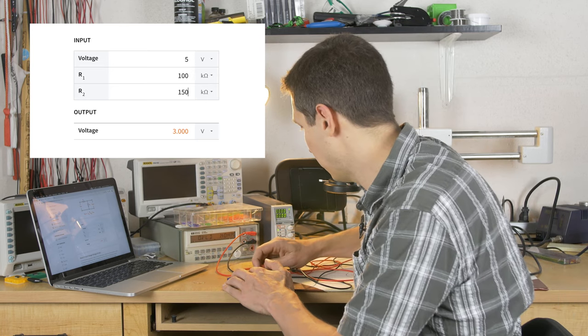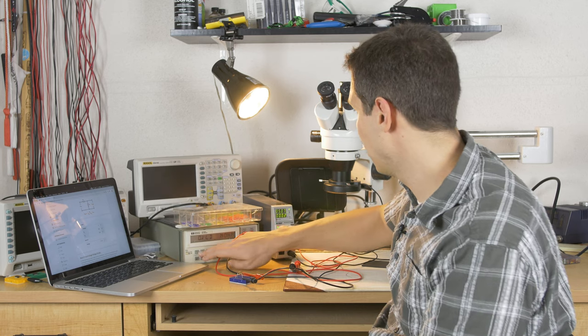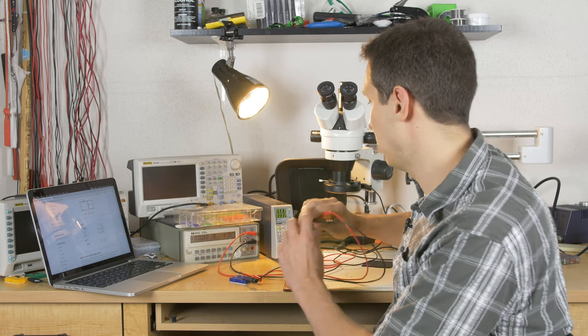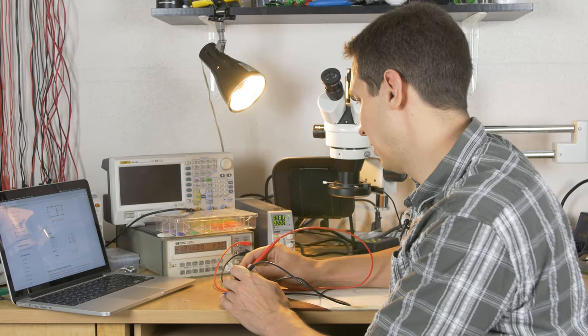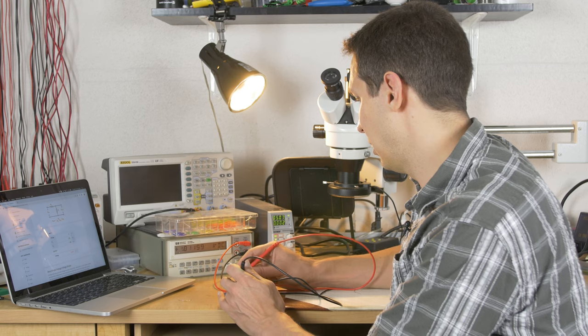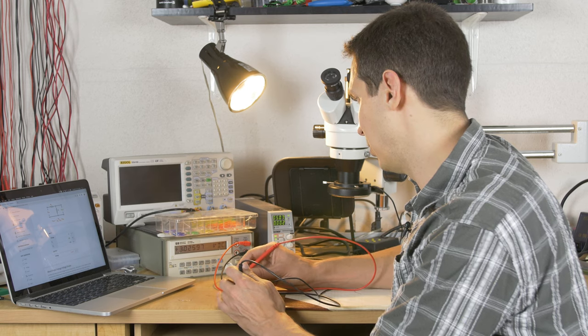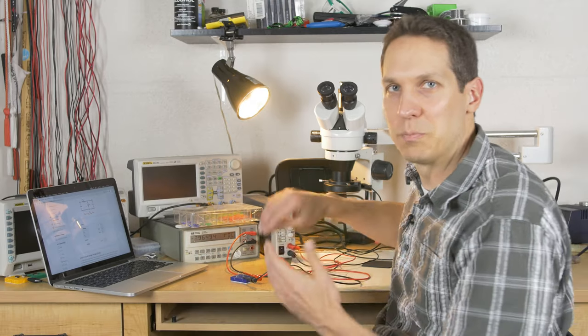I'm going to hook it up and turn on the power. And it's showing 5 volts. So now I'm going to measure my voltage. R1 is measuring 2.02 volts, and R2 is measuring 3.025 volts, which makes perfect sense.